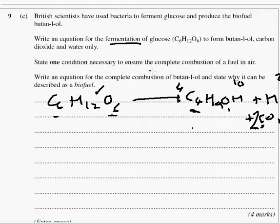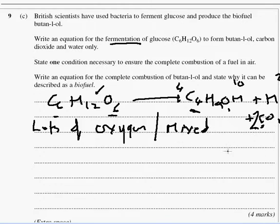State one condition necessary to ensure the complete combustion of fuel in air. Lots of oxygen. Could have that. Or ensure it's mixed. You could have either one of those, it's mixed thoroughly. Because even if you've got plenty of oxygen, if the oxygen's not near your butane-1-ol, it's not going to burn very well.